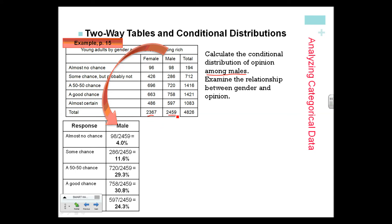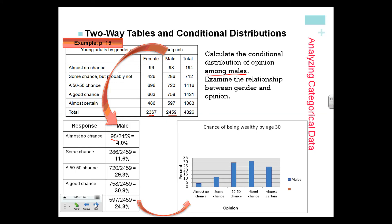The total percent of males—all the males, 2,459—that say almost no chance: 98 is 4%. And then I have all the totals there, and I can put it in a bar graph, very much like we did before.